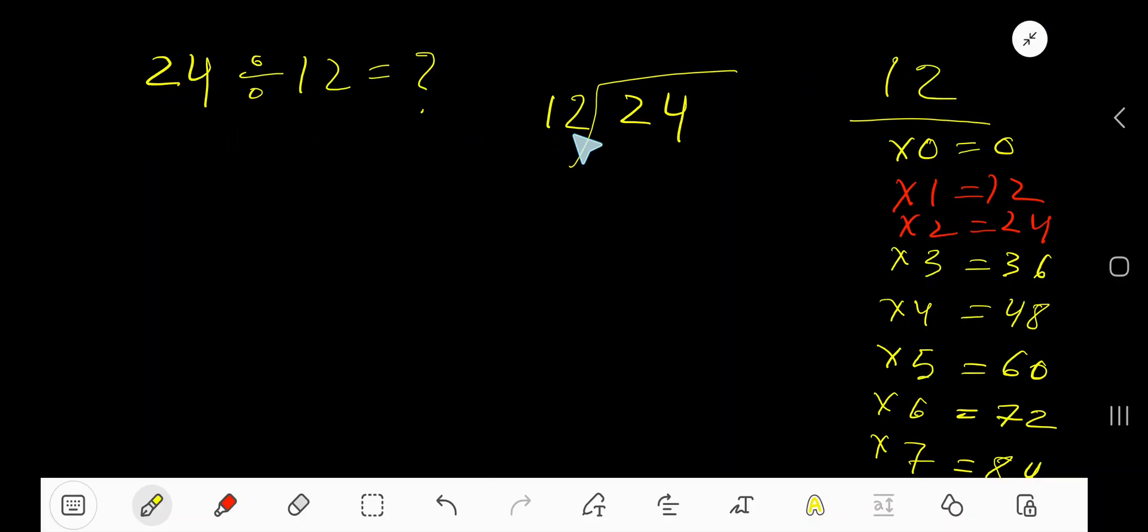24 divided by 12. Here 12 is the divisor, so we need the multiplication table of 12. 12 times 0 equals 0, 12 times 1 equals 12, 12 times 2 equals 24, 12 times 3 equals 36, 12 times 4 equals 48, 12 times 5 equals 60.